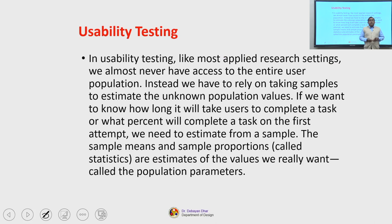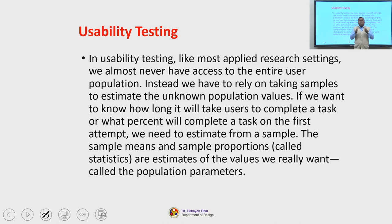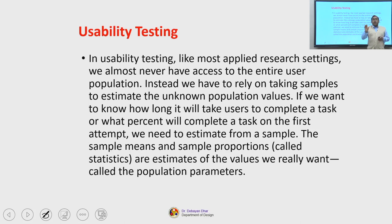In usability testing, we almost never have access to the entire user population because it is too large. So instead we rely on taking samples to estimate the unknown population values. If we want to know how long it will take users to complete a task, or what percent will complete a task on the first attempt, we need to estimate from our samples that are representative of the population. The sample means and proportions — called statistics — are estimates of the population parameters.